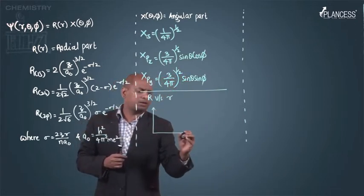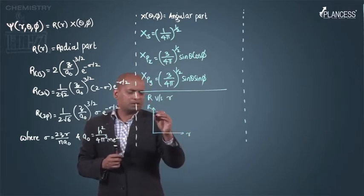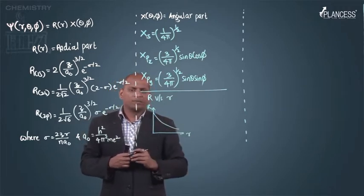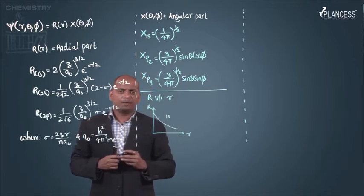For 1s orbital, we can plot a graph like this way, r versus r, this way. This is for 1s orbital.